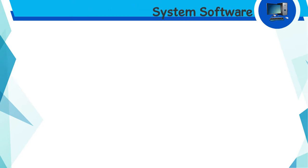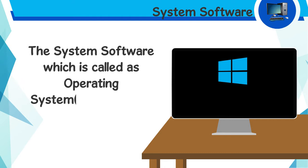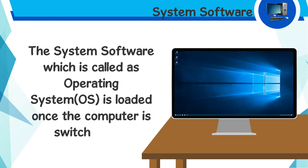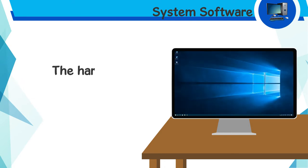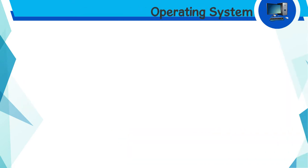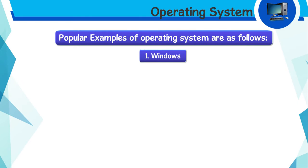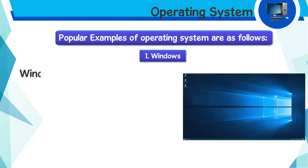The system software, which is called the operating system (OS), is loaded once the computer is switched on. The hardware receives its instructions from the software. Popular examples of operating systems are as follows.